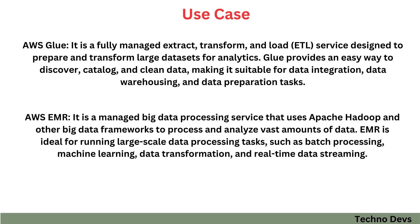Use Case — AWS EMR: It is a managed big data processing service that uses Apache Hadoop and other big data frameworks to process and analyze vast amounts of data. EMR is ideal for running large-scale data processing tasks such as batch processing, machine learning, data transformation, and real-time data streaming. For example, if you have a large dataset of customer clickstream data and want to run advanced analytics — such as identifying patterns, segmenting customers, and generating recommendations — you can use AWS EMR to process and analyze the data at scale, leveraging Apache Hadoop, Apache Spark, or other big data frameworks distributed across a cluster of EC2 instances to run complex analytics algorithms and machine learning tasks.